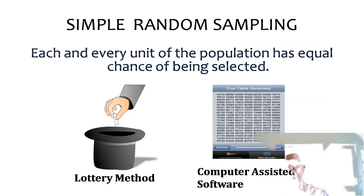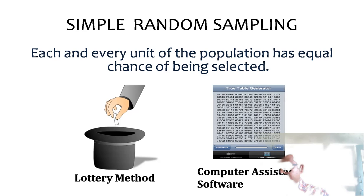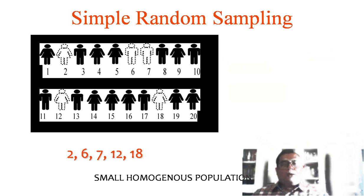The first technique under probability sampling is simple random sampling. This means each and every unit of the population has an equal chance of being selected. The selection of the unit is determined by chance only. The basic procedures are the lottery method and computer-assisted software. For example, we randomly select members such as 2, 6, 7, 12, and 80 — all members from 1 to 20 have an equal chance of being selected.